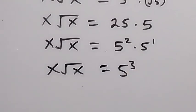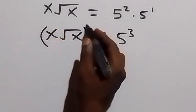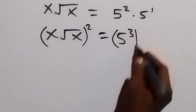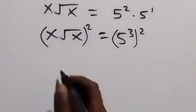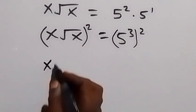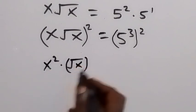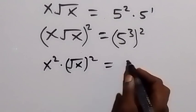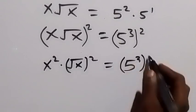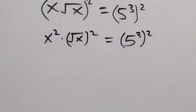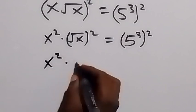From here, let's take the square on both sides again. We square this side and also we square this side. This square will affect these two numbers: we have x squared multiplied by root x squared. This gives us 5 raised to power 3, then squared. The square cancels the square root, so we have x squared times x.